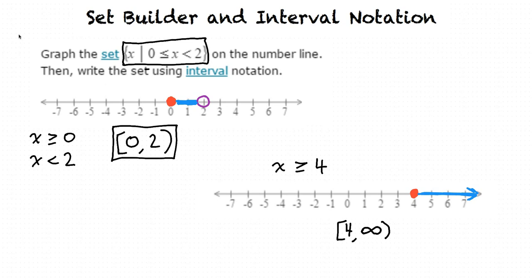So, set builder notation shows our interval as inequalities, and interval notation shows us a range of possible values, if I understand this correctly. Exactly, you understand the topic very well.